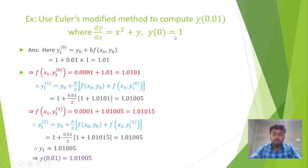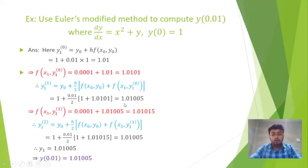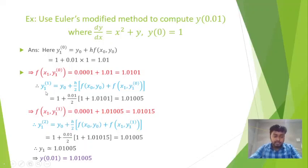We put y₀ = 1 and h = 0.01 and f(x₀, y₀) = 1, giving y₁⁽⁰⁾ = 1.01. Then f(x₁, y₁⁽⁰⁾) = 1.010. Using Modified Euler's formula, y₁⁽¹⁾ = 1.01005 and f(x₁, y₁⁽¹⁾) = 1.01015. Similarly, y₁⁽²⁾ = 1.01005. Since y₁⁽¹⁾ and y₁⁽²⁾ agree up to 6 significant figures, the result is 1.01005.